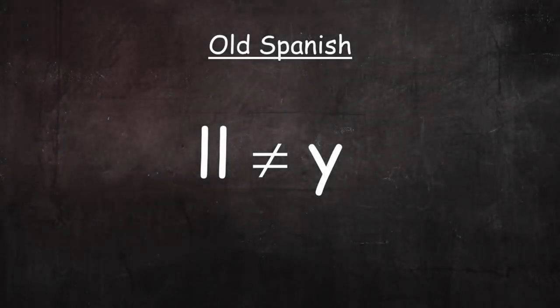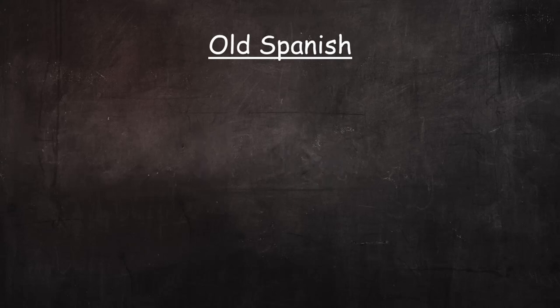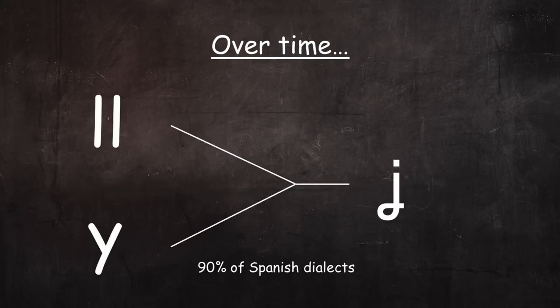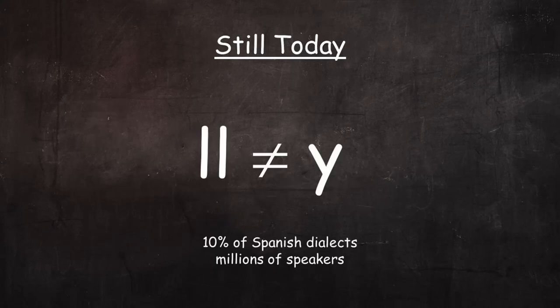In Old Spanish, double L and Y were pronounced differently from one another. Double L was the Spanish grapheme equivalent of Portuguese LH and Italian GL. Over time, a large majority of Spanish dialects — around 90% of them — have merged the two sounds into one. Still, there are millions of speakers in Spain and South America today who maintain the distinction, so a well-informed Spanish student will want to know about it.